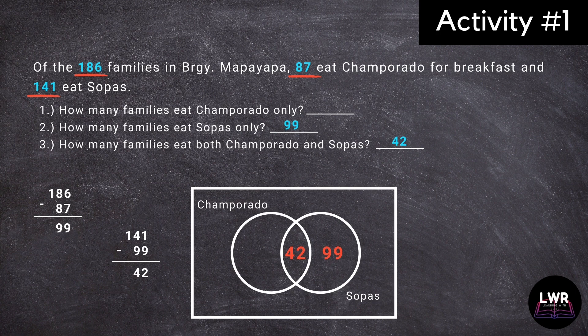And lastly, it is stated in the problem that 87 families eat Champorado for breakfast. We will subtract 42 from that number to get 45, which is the answer to the first question. Were you able to get the correct answer in activity number one?